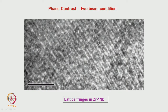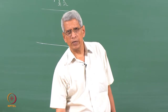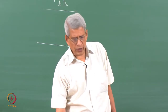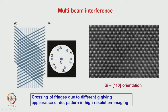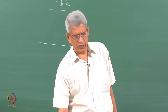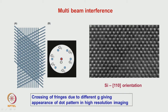This fringe contrast is what we obtain, for example in zirconium-1-niobium using a two-beam condition. If multiple beams are used, fringes due to each beam appear and the fringe spacing — where maximum or minimum intensity occurs — is perpendicular to the diffraction vector. When many spots are used to create lattice fringes, intersecting fringes give dot contrast that appears like atomic resolution but does not truly represent it.